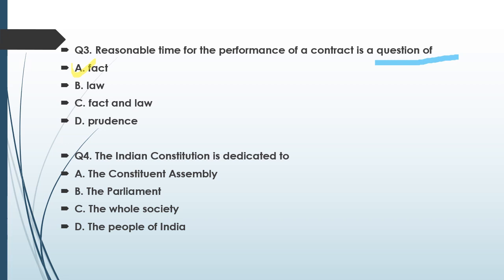Question number four: The Indian Constitution is dedicated to — option A: the Constituent Assembly, option B: the Parliament, option C: the whole society, option D: the people of India. For this you have to refer to the Preamble of the Indian Constitution. The ultimate authority lies with the people of India — 'We the people of India' — so option D is the correct answer.